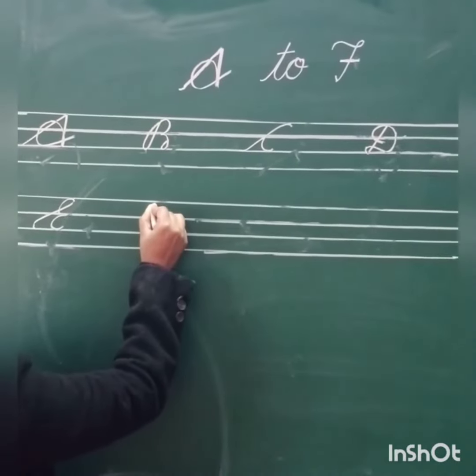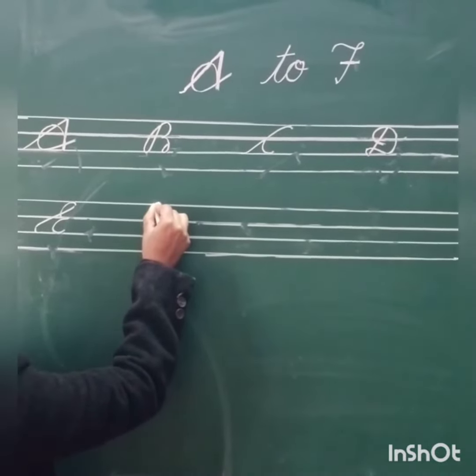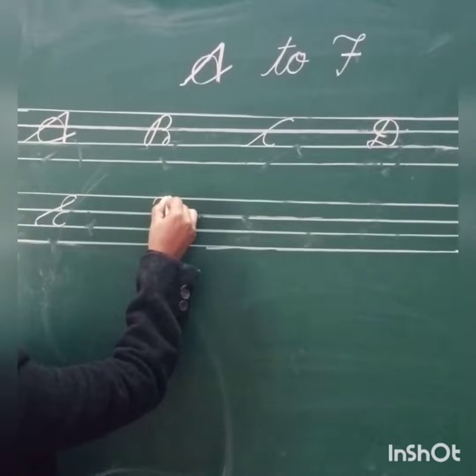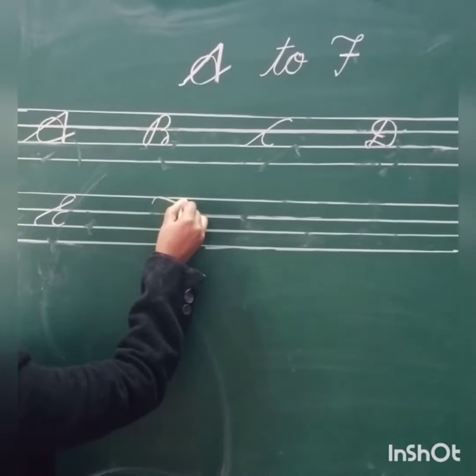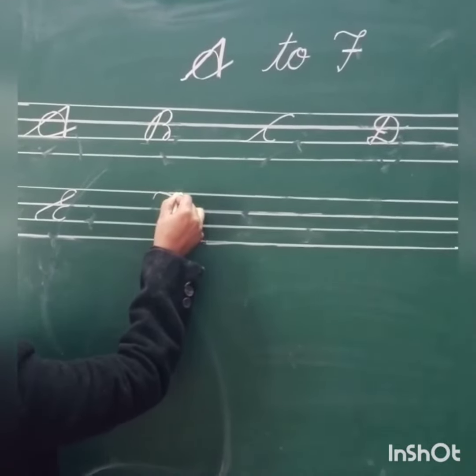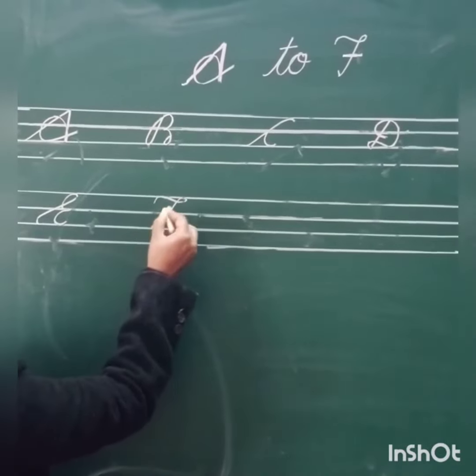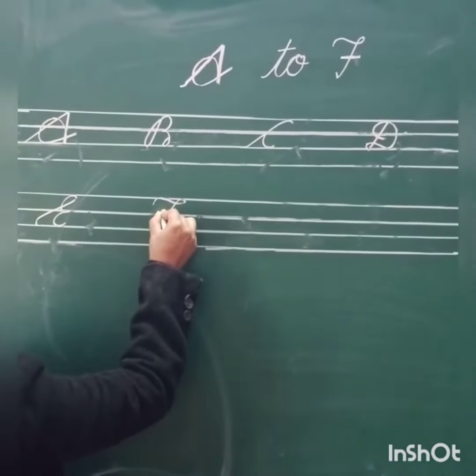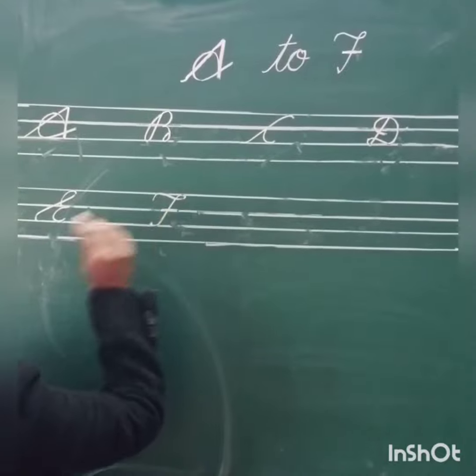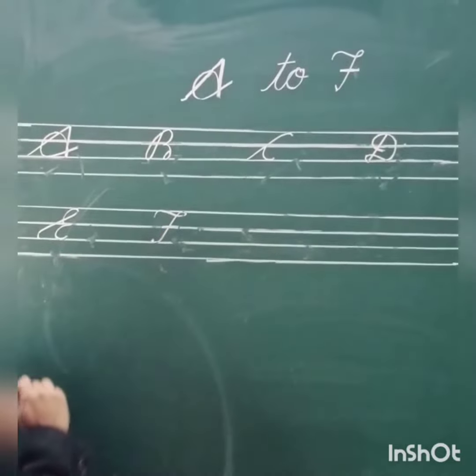Next, cursive F: tail, round, sliding one, then sliding line — cursive F.